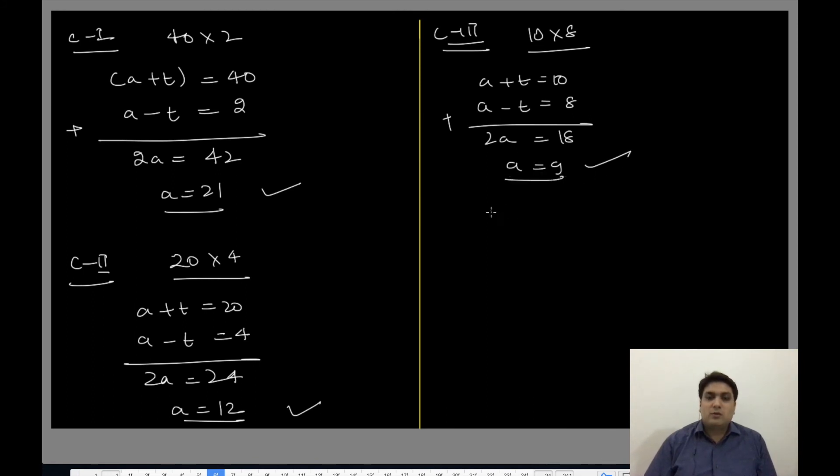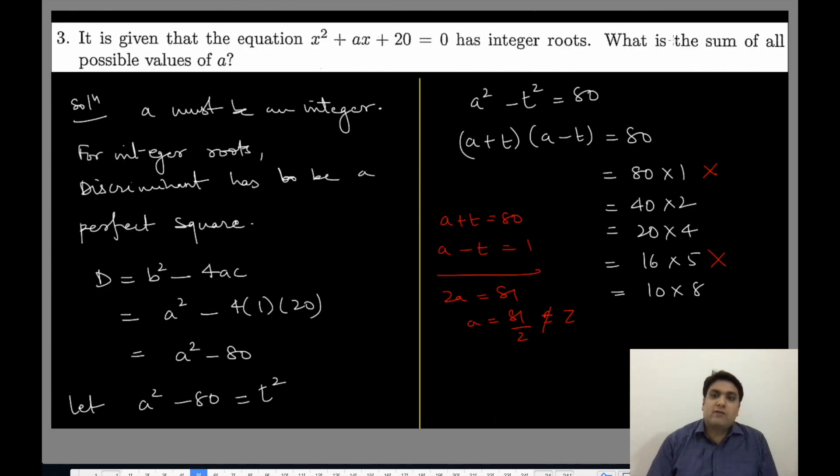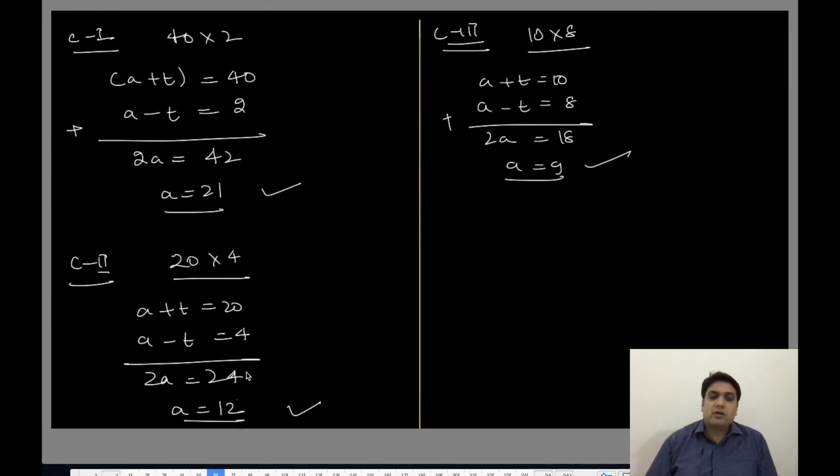Now we need to find the sum of all possible values of a. The sum will be 21 + 12 + 9, which is 30 plus 12, equals 42. This is your required answer.